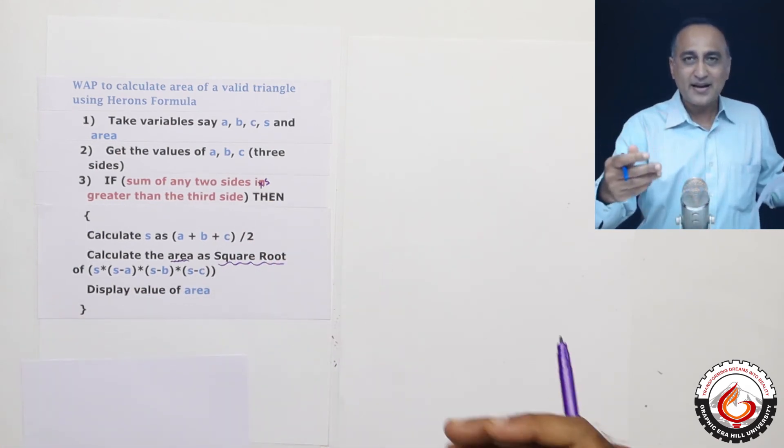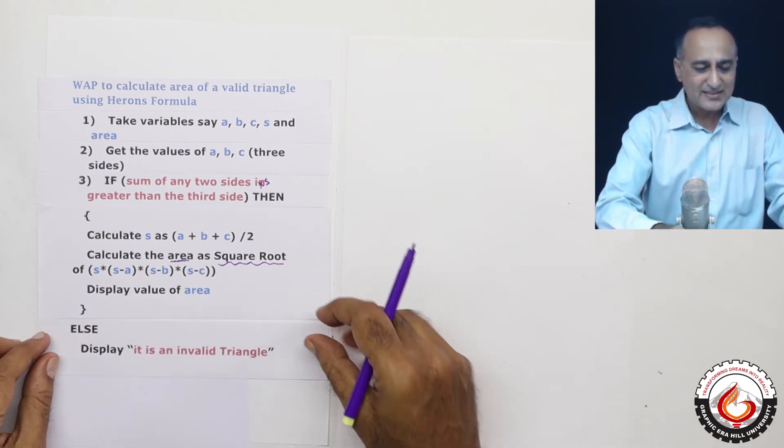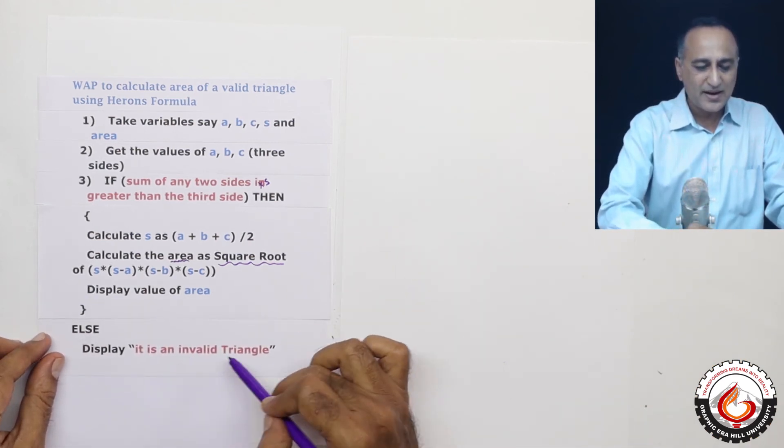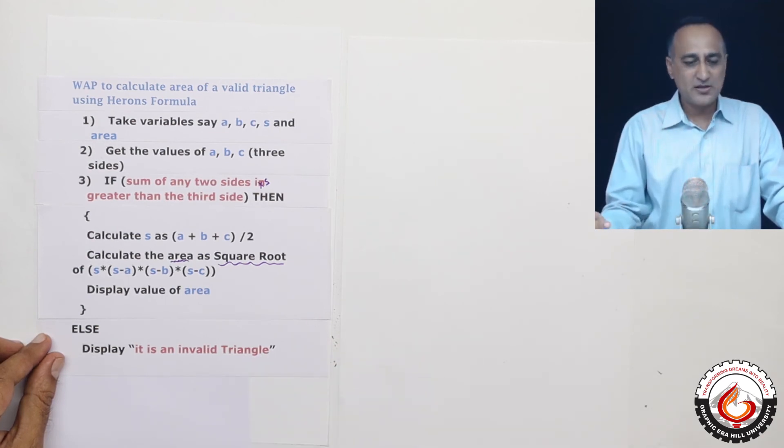Now assume I enter a triangle like 1, 2 and 20. It's an invalid triangle. In that case this else is going to get activated and it's going to say invalid triangle and display the message on the screen.